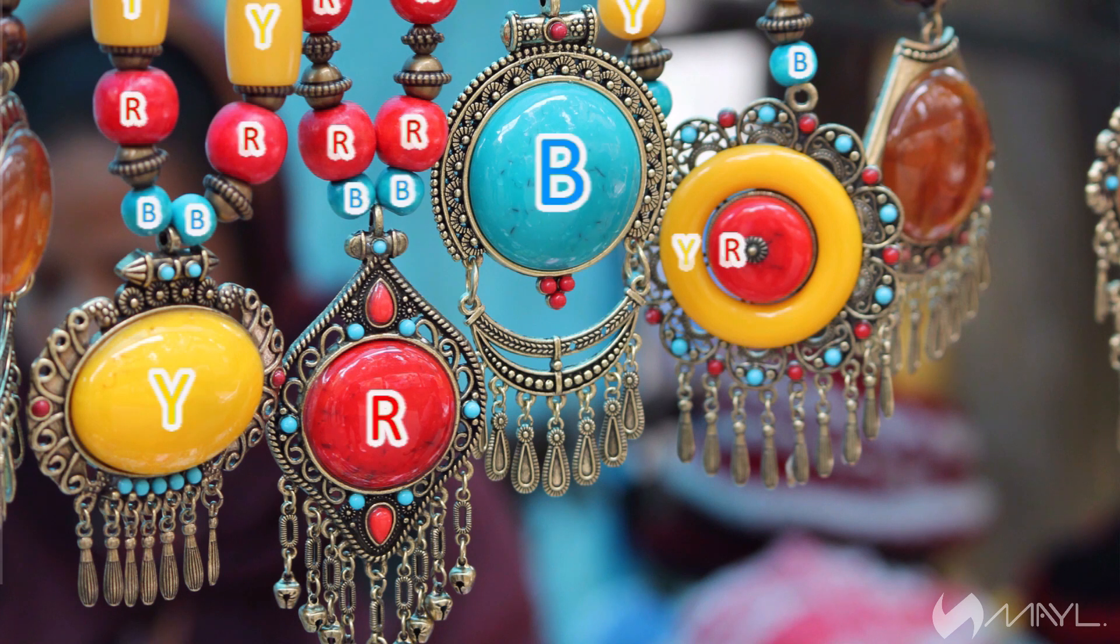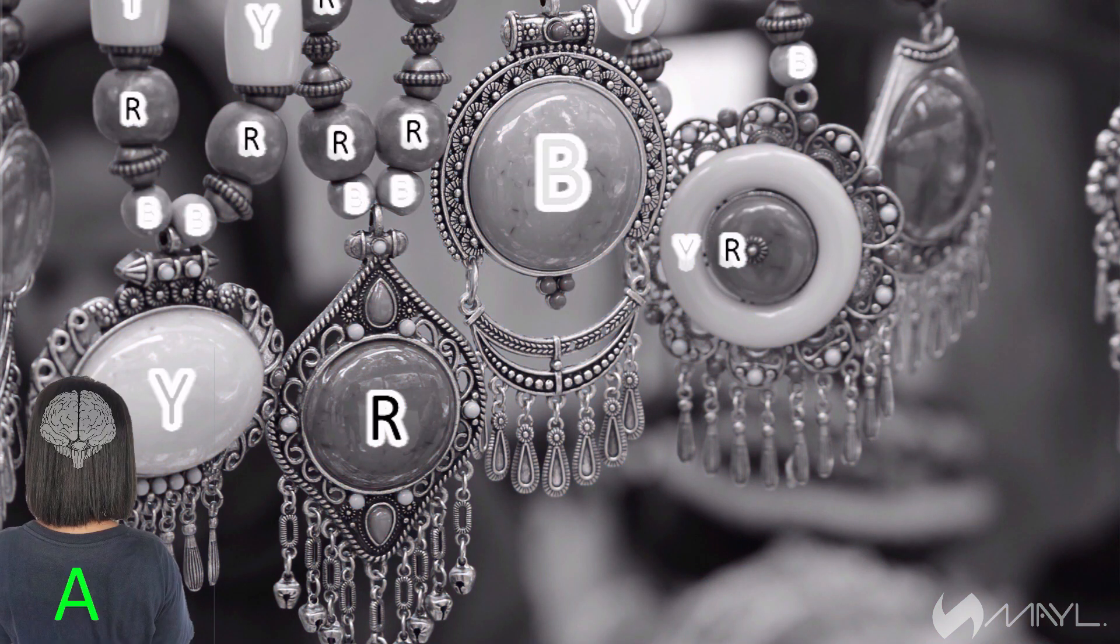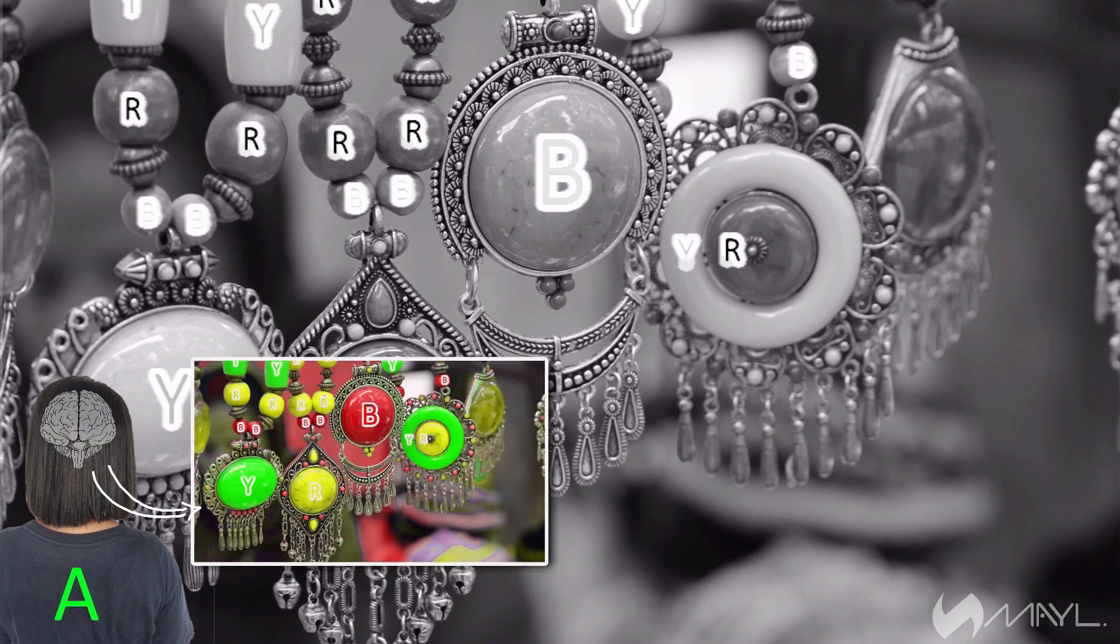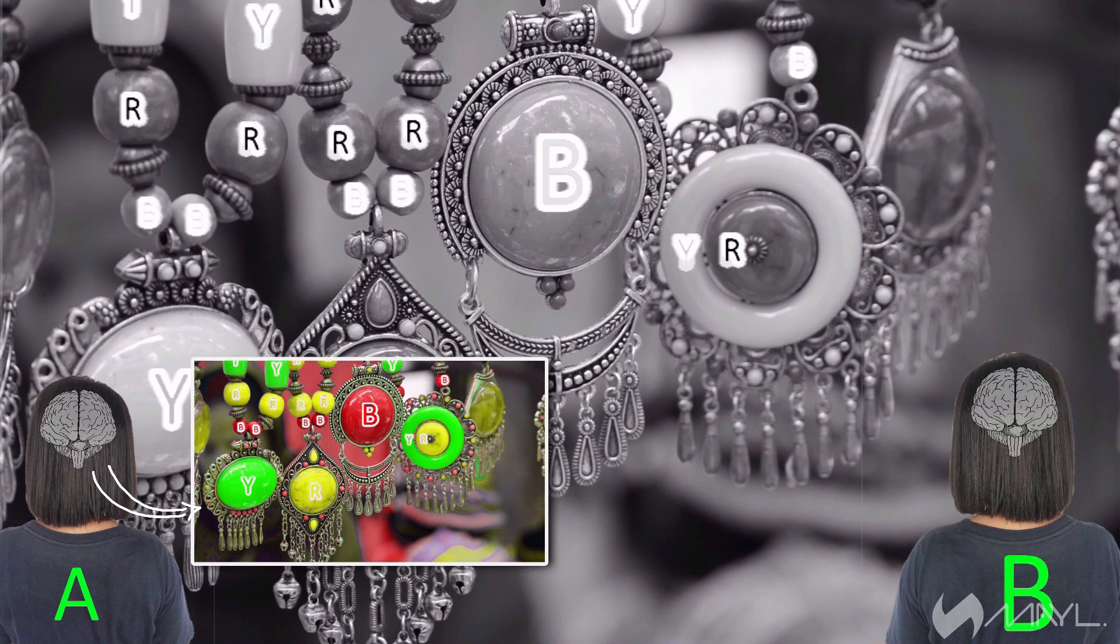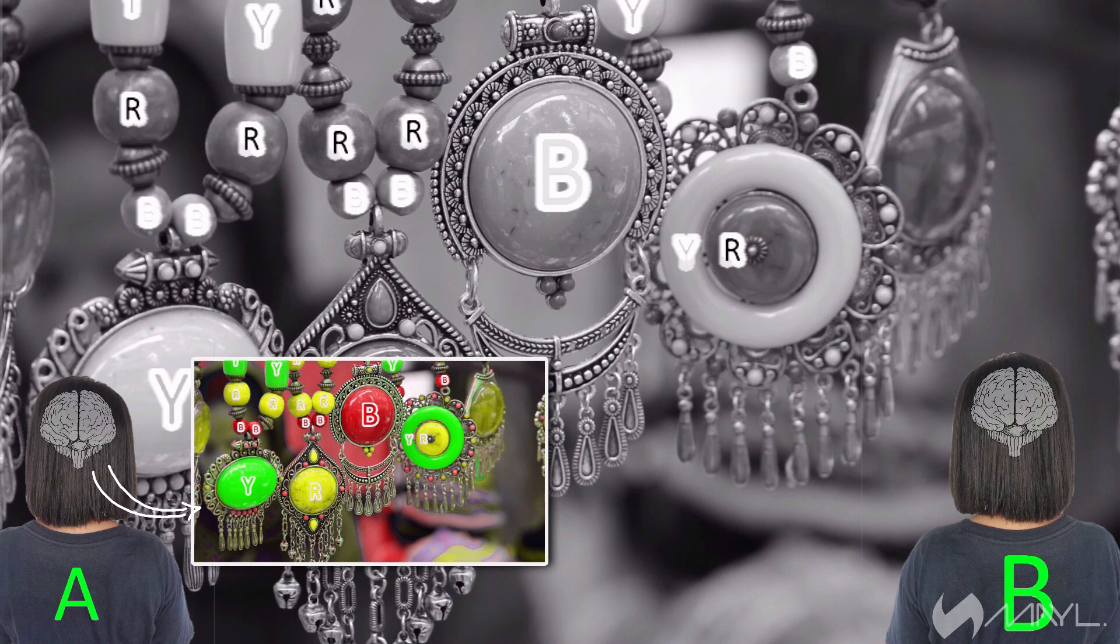But if some other person A sees this image, this same image can be processed by A's brain and give A this image in A's head. Meaning this could be how A sees it, but some person B could be seeing the same thing completely different from how A sees it. Maybe like this.